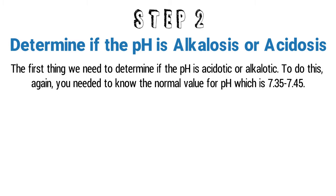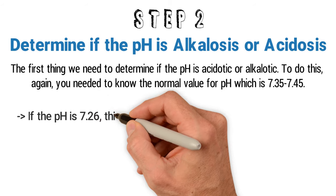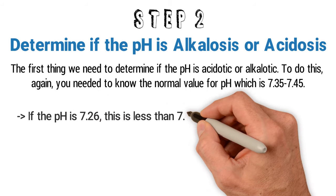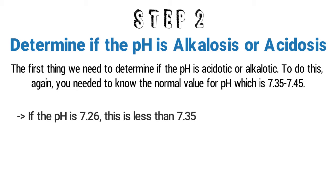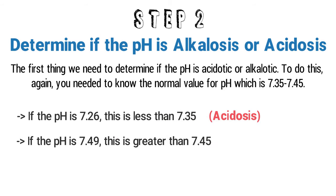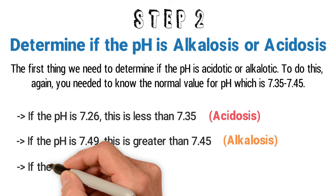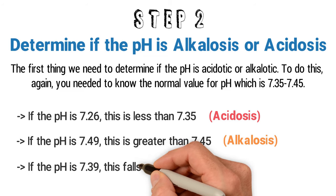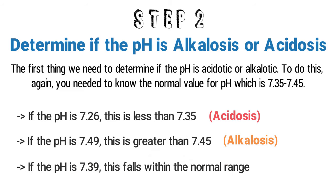Let's discuss some examples. If the pH is 7.26, this is less than 7.35, so we know it has to be acidosis. If the pH is 7.49, this is greater than 7.45, so we know that it has to be alkalosis. If the pH is 7.39, this falls within the normal range, so we know that the pH is normal.